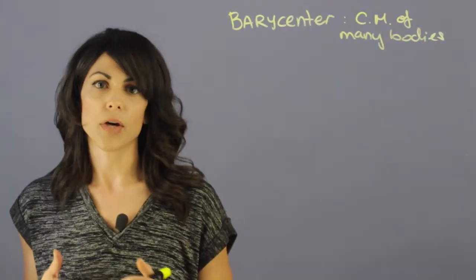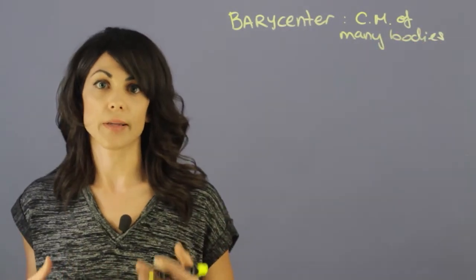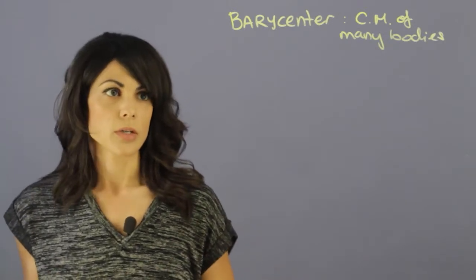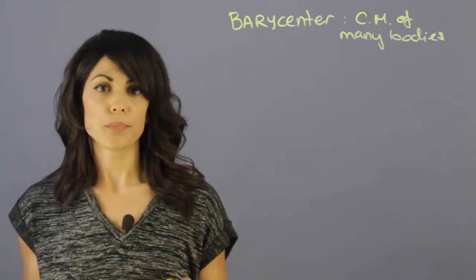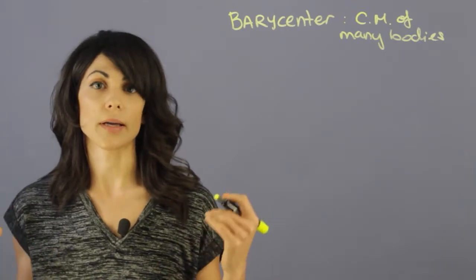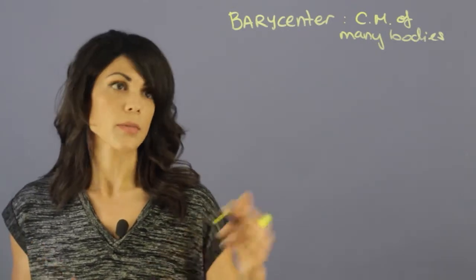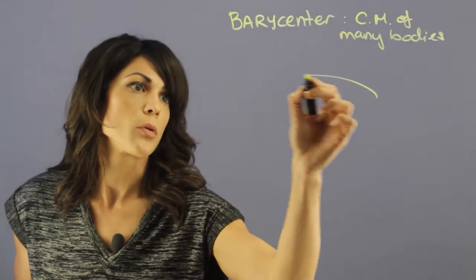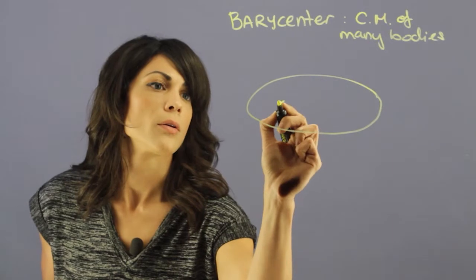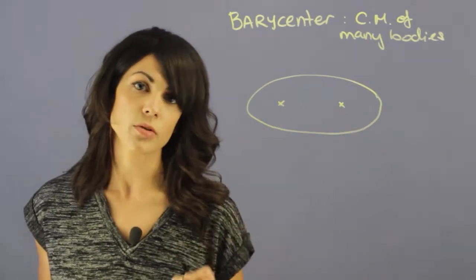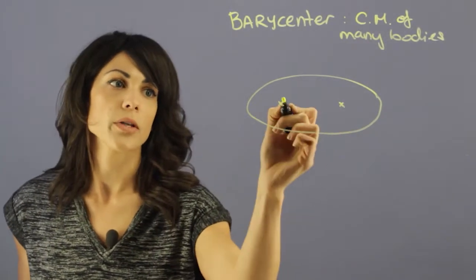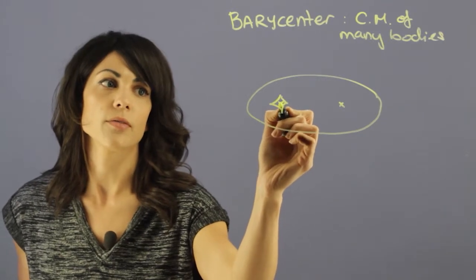Another thing that we want to talk about is elliptical orbits, and here we will introduce a whole new set of terms. Planets orbit the sun — they revolve around the sun in ellipses. So if we have an elliptical orbit, there are several things that are important. Here are the focal points; generally at one, you have the star.